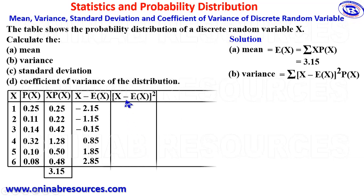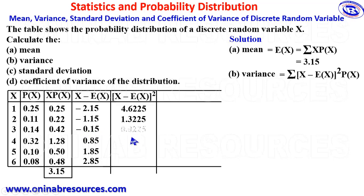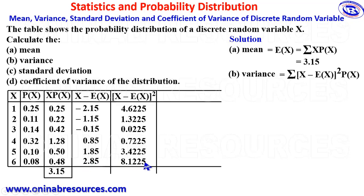Next we create the (x minus E(x)) squared column, squaring each value: negative 2.15 squared gives 4.6225; negative 1.15 squared gives 1.3225; negative 0.15 squared gives 0.0225; 0.85 squared gives 0.7225; 1.85 squared gives 3.4225; 2.85 squared gives 8.1225.